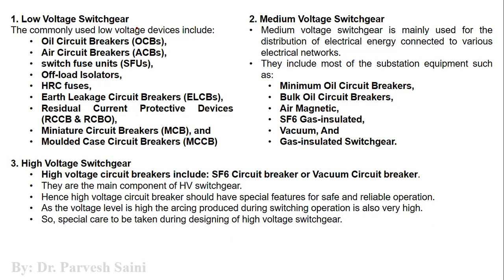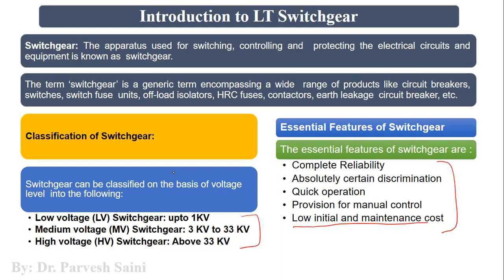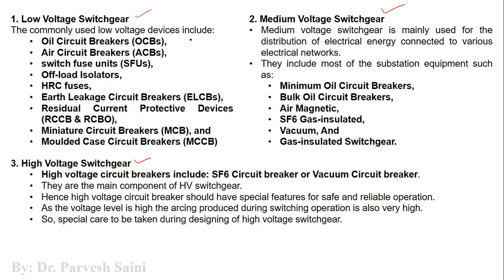The categories of switchgear are low voltage, medium voltage, and high voltage switchgear. Low voltage switchgear types include oil circuit breakers, HRC fuses, isolators, RCCB, MCB miniature circuit breakers, and MCCB — these are found installed at home in the distribution box. Medium voltage switchgear includes minimum oil circuit breakers, bulk oil circuit breakers, air magnetic, SF6 gas insulated, vacuum, and gas insulated switchgear, operating from 3kV to 33kV.